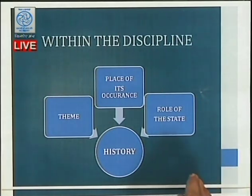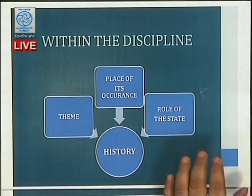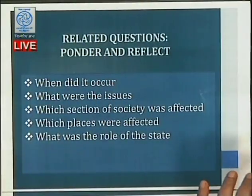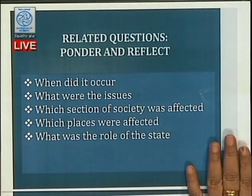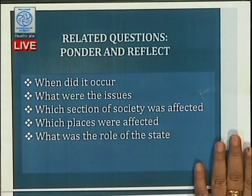For example, if I take any theme in history, the questions to ask are: where did it occur, and what was the role of the state? When we pose such questions, we are looking at interrelationships within the discipline. Some questions you can consider are: when did it occur? What were the issues? Which sections of society were affected? Which places were affected? What was the role of the state? Asking these questions helps us find interlinkages for any chosen theme.